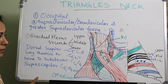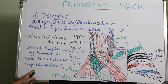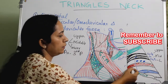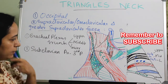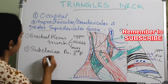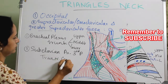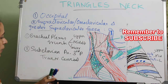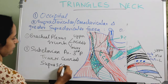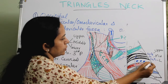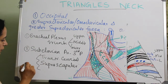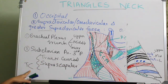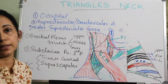Another content is the subclavian artery — specifically the third part of the subclavian artery. There are also two more arteries in the supraclavicular triangle: the transverse cervical artery, which mainly comes from the occipital triangle with a part entering the supraclavicular triangle, and the suprascapular artery. Both the transverse cervical and suprascapular arteries are branches of the thyrocervical trunk of the first part of the subclavian artery.